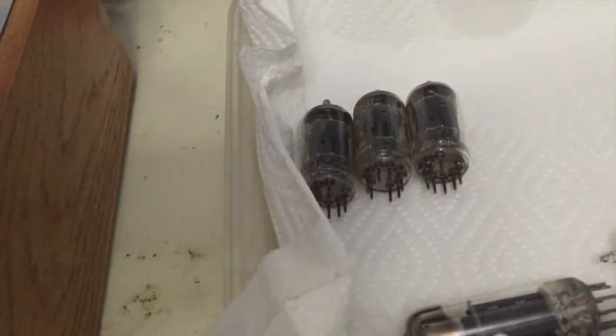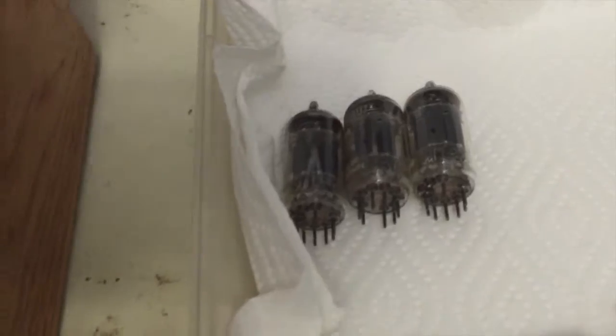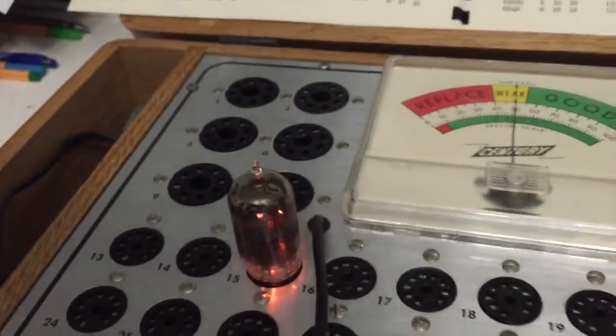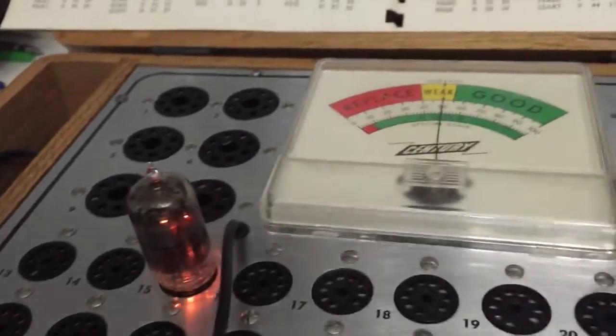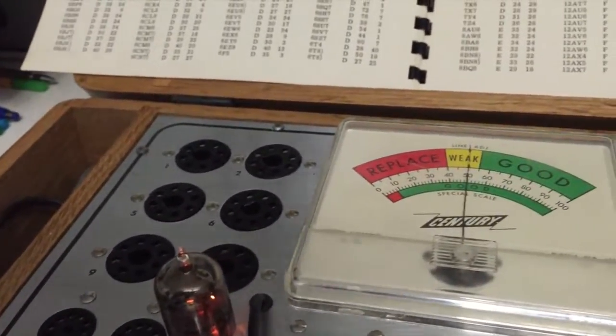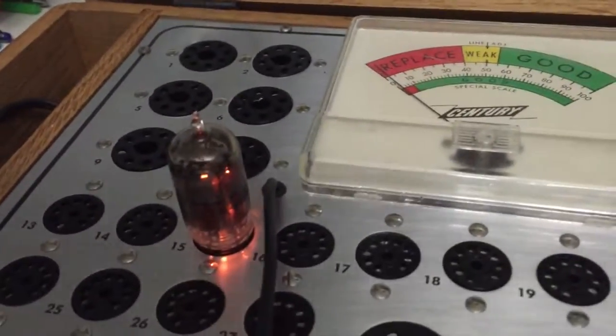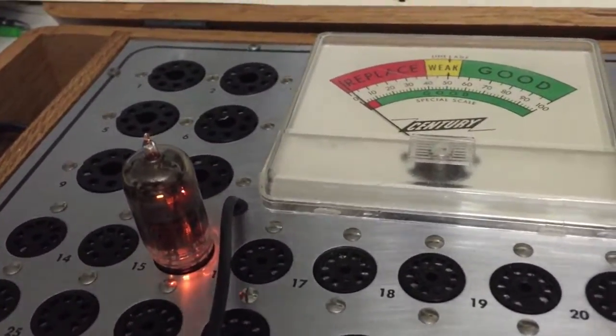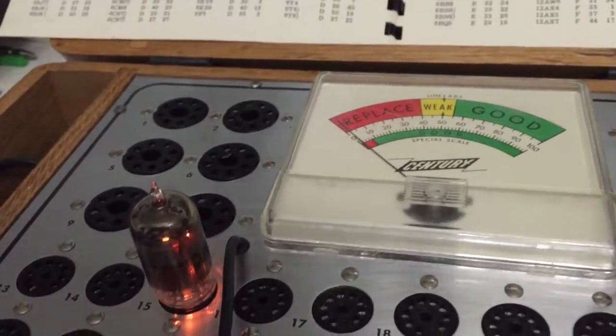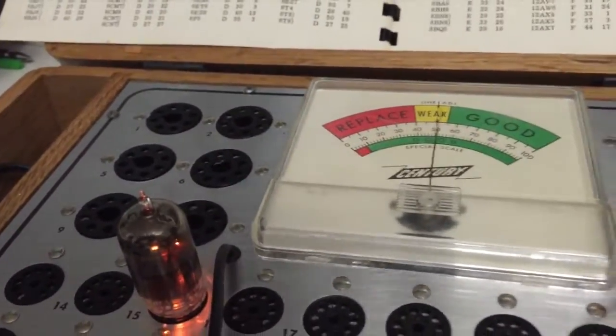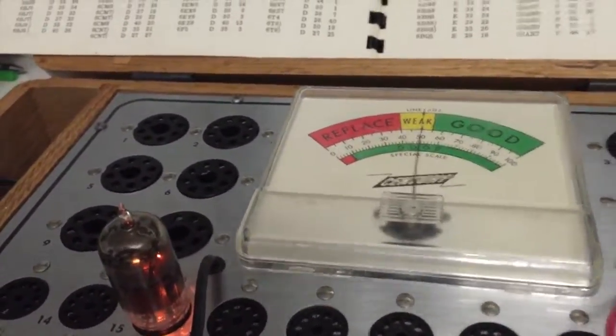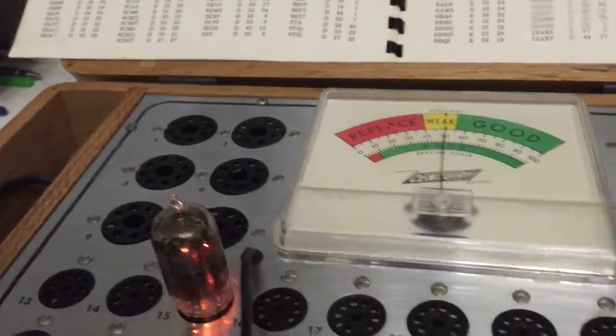I've already checked these three 12AU7s—all three are good. We'll have to note that the 6AN8, as read on the special scale, still shows to be weak. This is probably a candidate for replacement. We'll look at the circuit this tube affects within the oscilloscope and it will most likely be replaced.